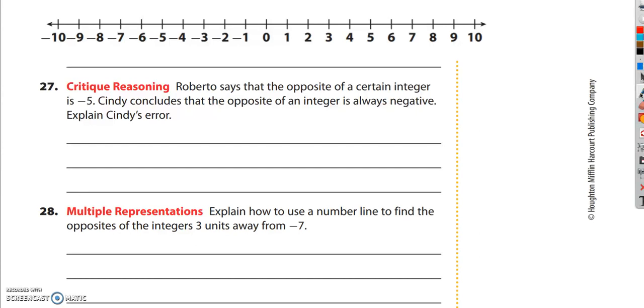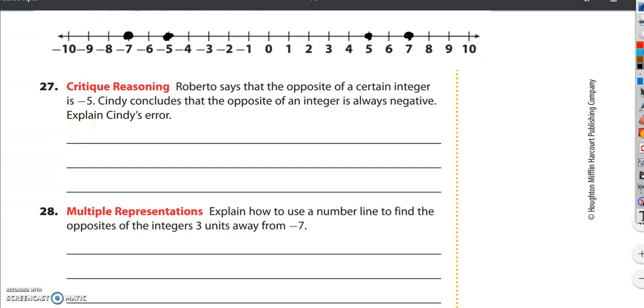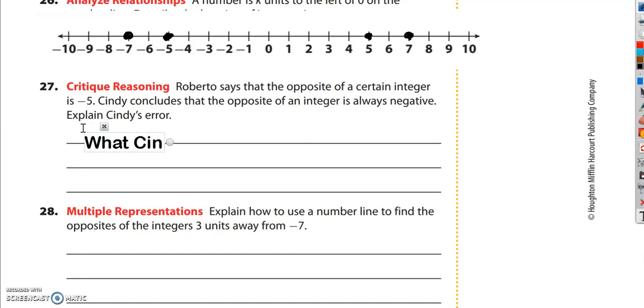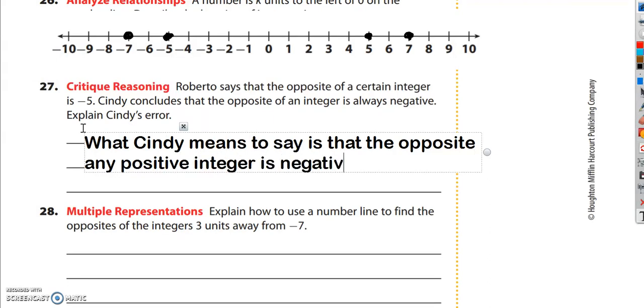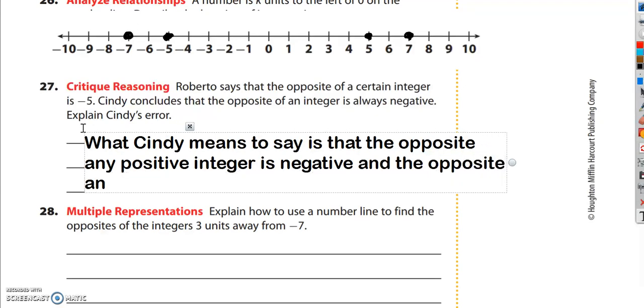Question 27 says, Roberto says that the opposite of a certain integer is negative 5. Cindy concludes that the opposite of an integer is always negative, explain Cindy's error. Well, if Roberto's integer was 5, the opposite would be negative 5. So Roberto's right. Cindy said that the opposite of an integer is always negative. Well, what if I told Cindy to tell me the opposite of negative 7? That would be positive 7. So, what Cindy means to say is that the opposite of any positive integer is negative. But the opposite of any negative integer is positive.